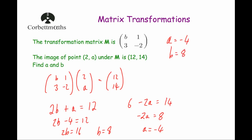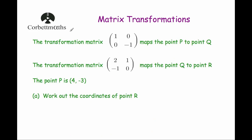Our next question: the transformation matrix 1, 0, 0, minus 1 maps point P to Q. Then the transformation matrix 2, 1, minus 1, 0 maps point Q to point R. We're given point P as (4, −3) and asked to work out the coordinates of point R. So there are two transformations happening — we apply the first matrix to P to find Q, then apply the second matrix to Q to find R.